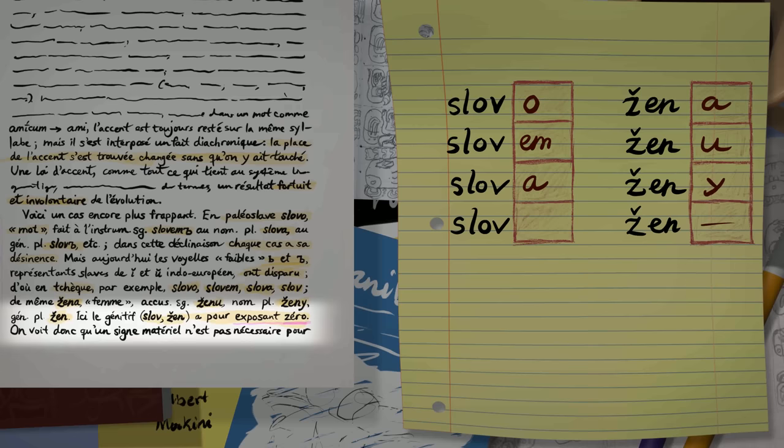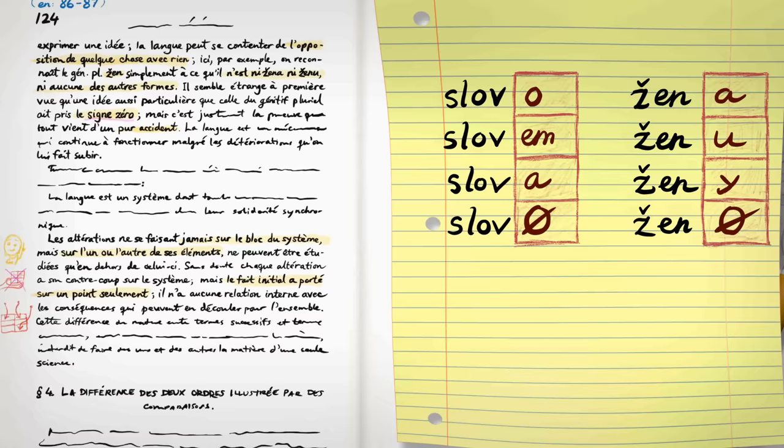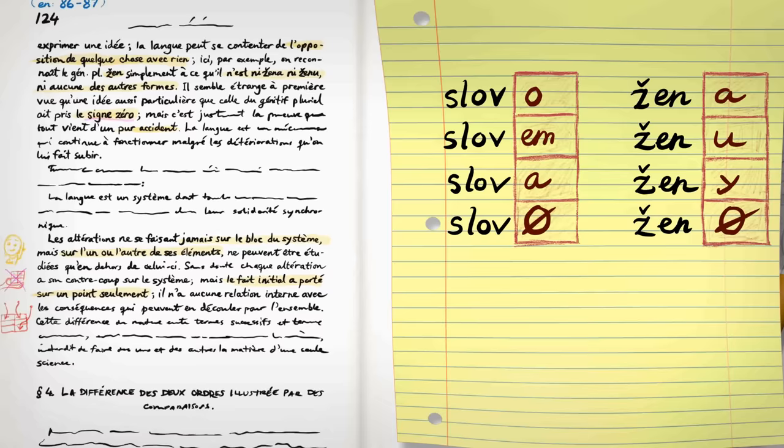So a sign materiel, a sign with substance, isn't needed to turn the page, to express an idea. Languages can make do with opposing something with nothing. That's a quote from my last video. It's a common re-quote in the zeros literature. So here, slov and zhen have a recognizable zero ending because they are not in any of the other forms. It's a sign with no expression, no sound, but still a meaning. And he calls it a zero sign.